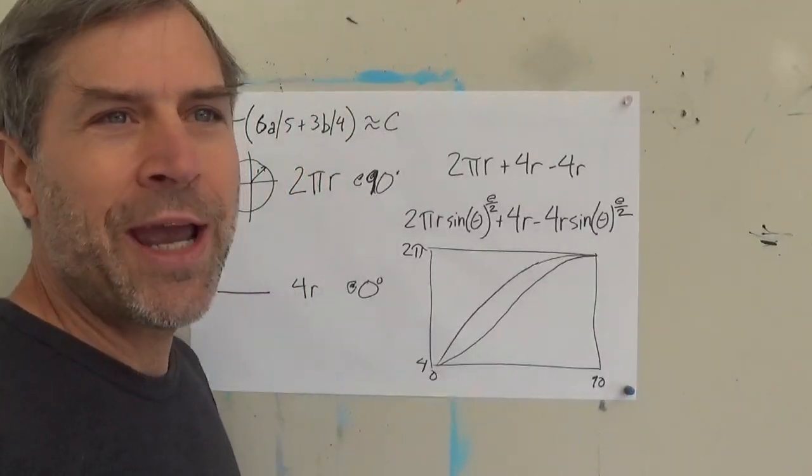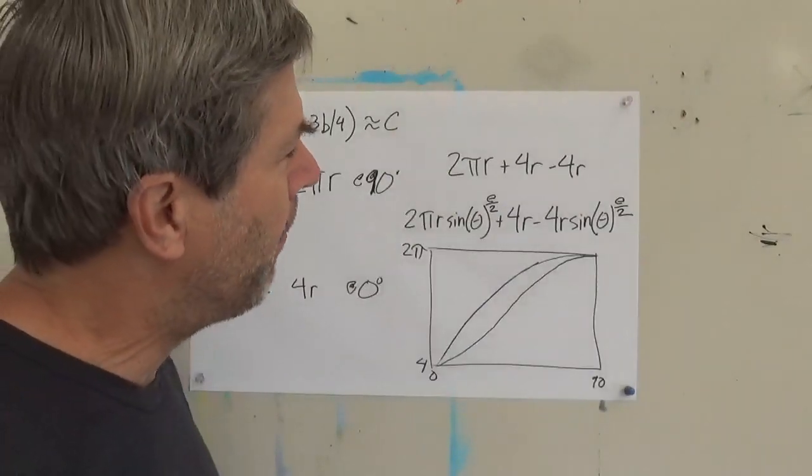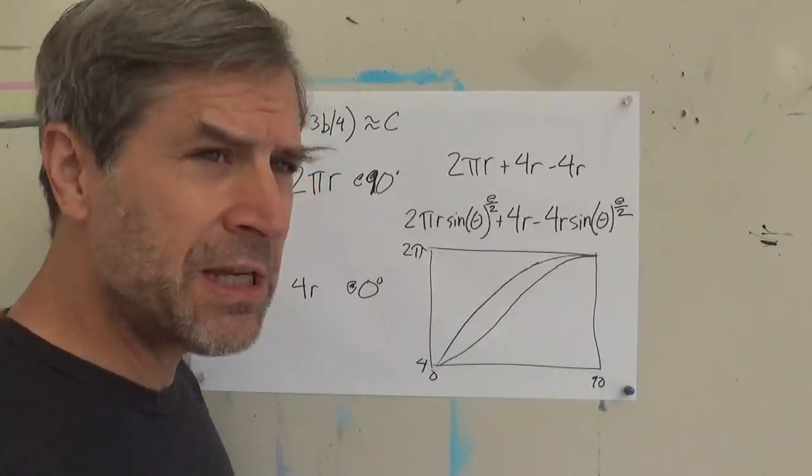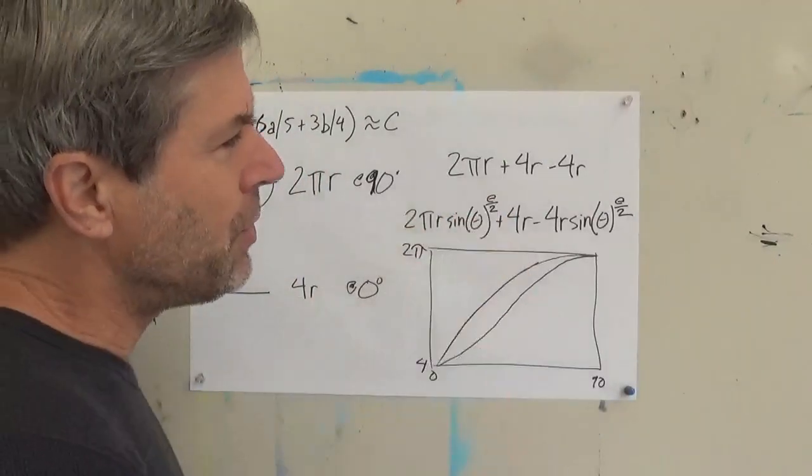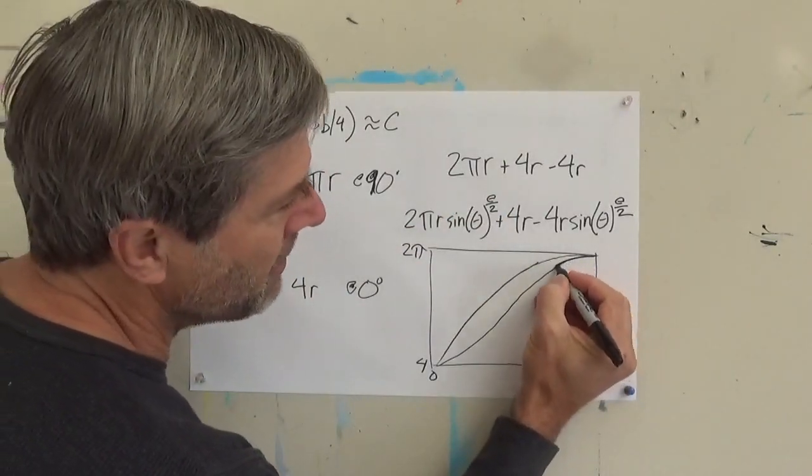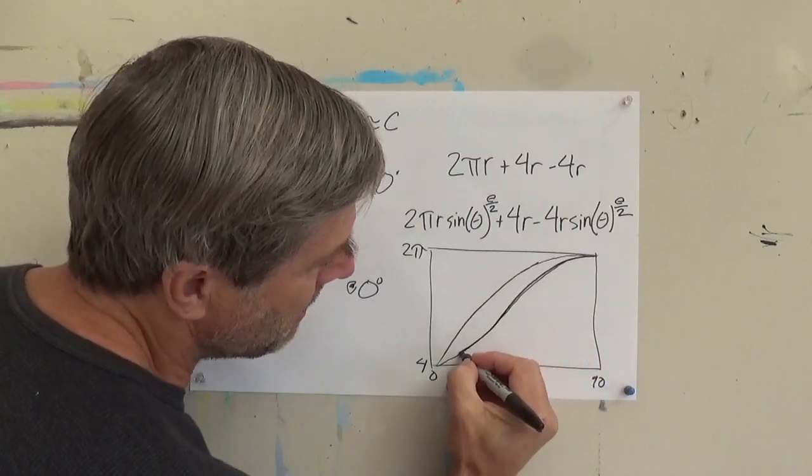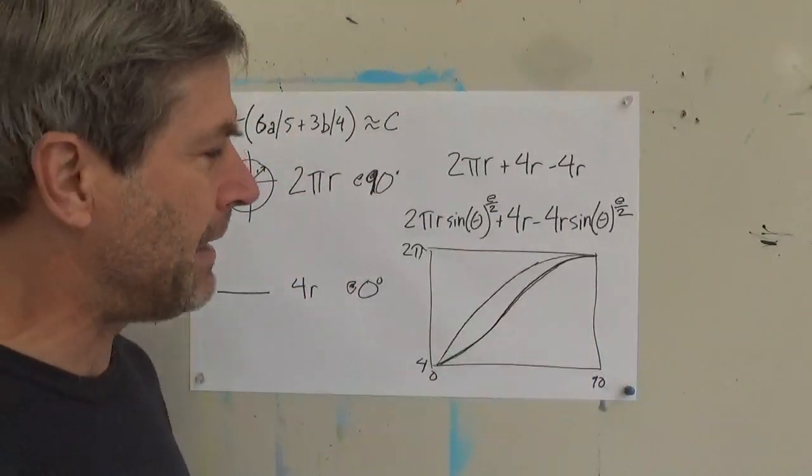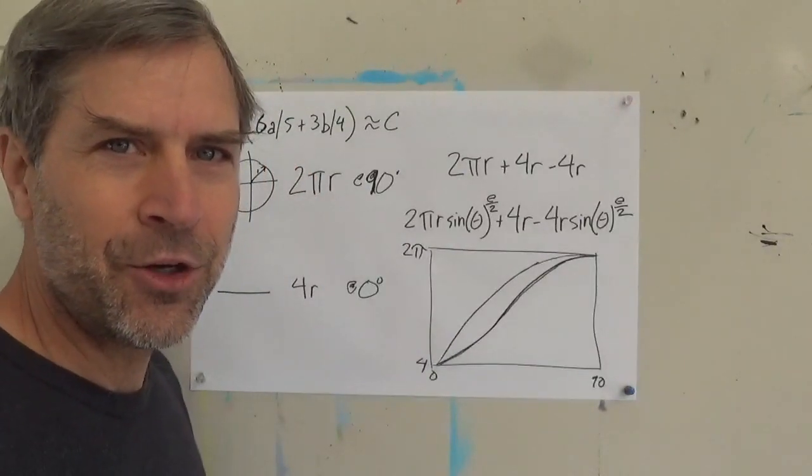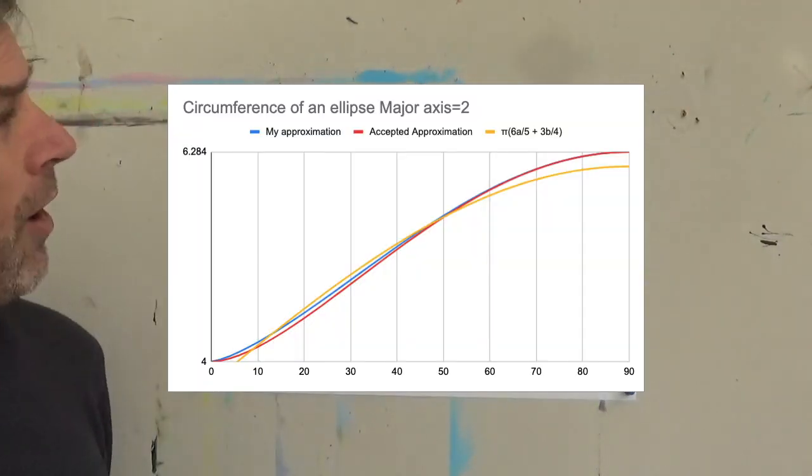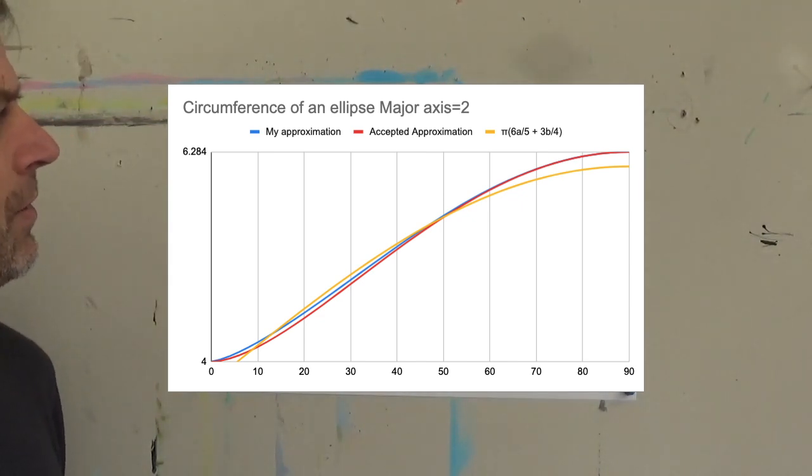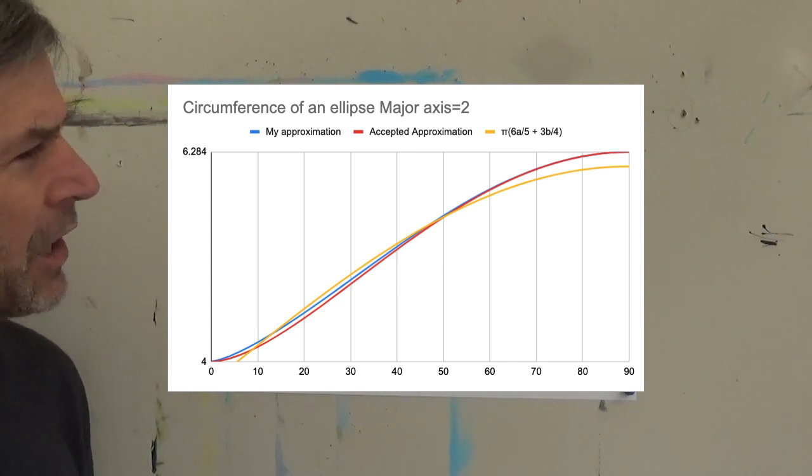I discovered that I could bring this trigonometric term to the power of e over 2. I started trying different constants, like the square root of 2, which did some things. But e over 2 gives an approximation that is almost exactly the correct curve. On this chart, you can see I've also included Matt's approximation in yellow. And my approximation is in blue. And the actual perimeters are in red.